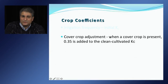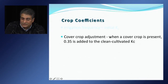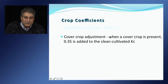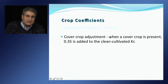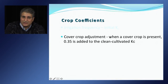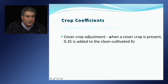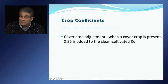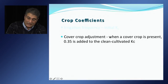COPPLUS accounts for cover crop contribution to crop coefficient values for tree and vine crops. Tree and vine crops with cover crops have higher crop coefficient values. When cover crop dates are entered into the program, COPPLUS automatically adds a value of 0.35 to the crop coefficient during that period; however, the crop coefficient values cannot exceed 1.15 or fall below 0.90.